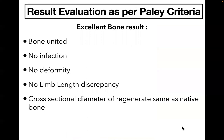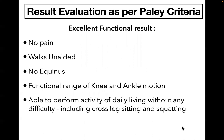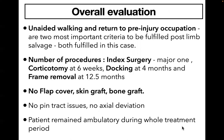Evaluating the result using Paley criteria, bone result and functional result are assessed separately. The bone has united without residual infection, residual deformity, or limb length discrepancy, and the overall cross-sectional area of the regenerate is the same as native bone — this falls in the excellent bone result category. Functionally, there is no pain, the patient walks unaided, has no equinus, has a functional range of knee and ankle motion, and is able to perform all activities of daily living including cross-leg sitting and squatting — this also qualifies as an excellent functional result.